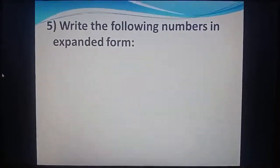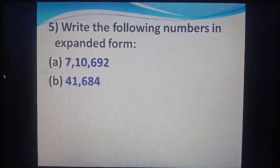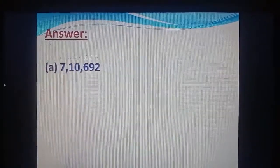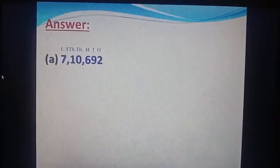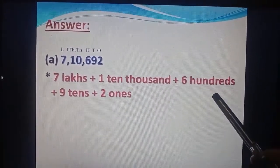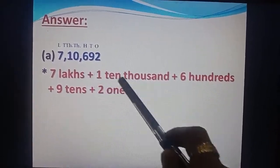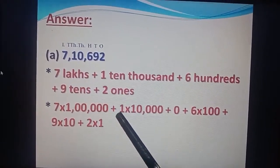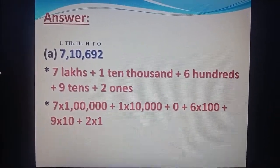Now come to question number 5. Write the following numbers in expanded form. A part: 7,10,692. First, we assign the places — ones, tens, hundred, thousand, ten thousand, and lakh. We write in three different ways. First way: 7 lakhs plus 1 ten-thousand plus 0 thousands plus 6 hundreds plus 9 tens plus 2 ones. We write 0 on the thousand place so we do not write that. Second way: 7 × 1 lakh plus 1 × 10,000 plus 0 plus 6 × 100 plus 9 × 10 plus 2 × 1.